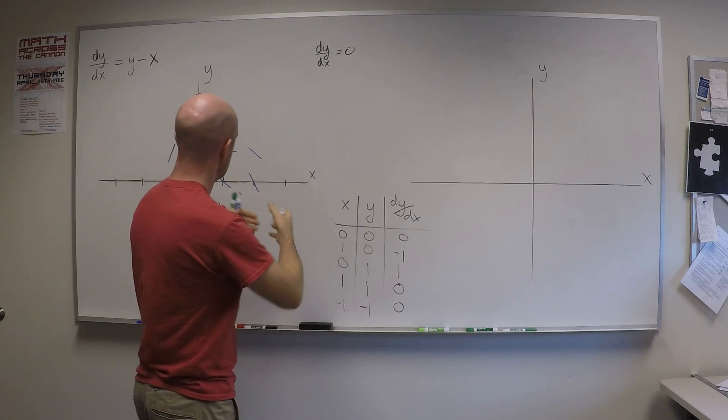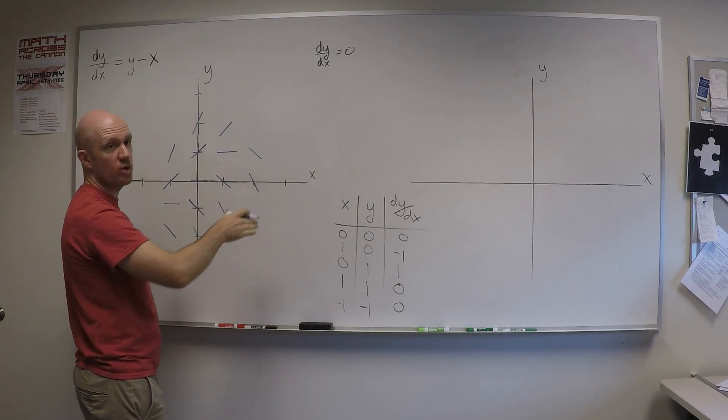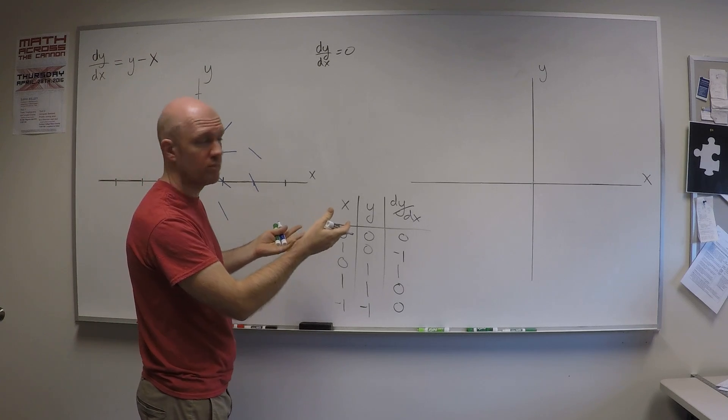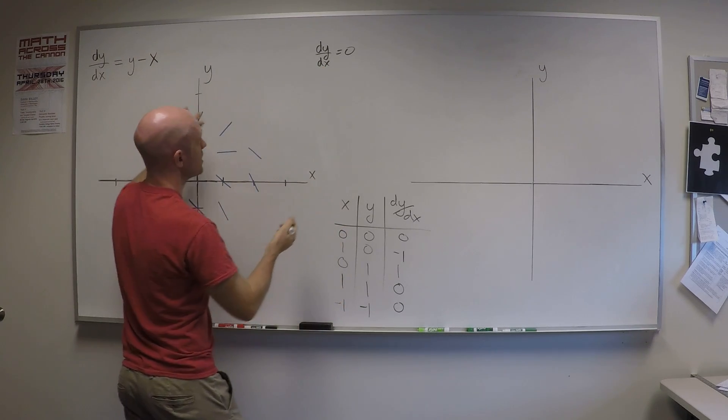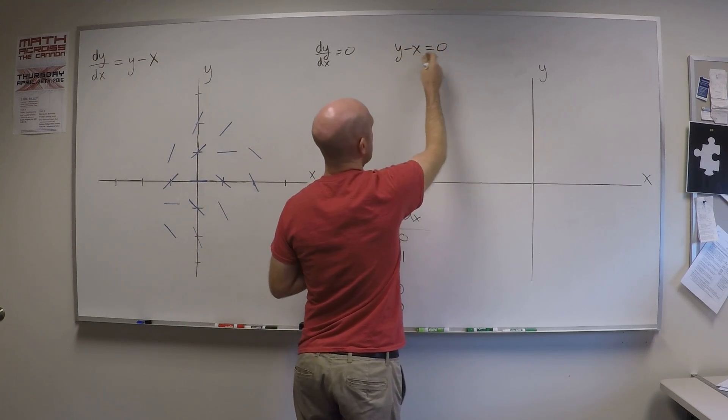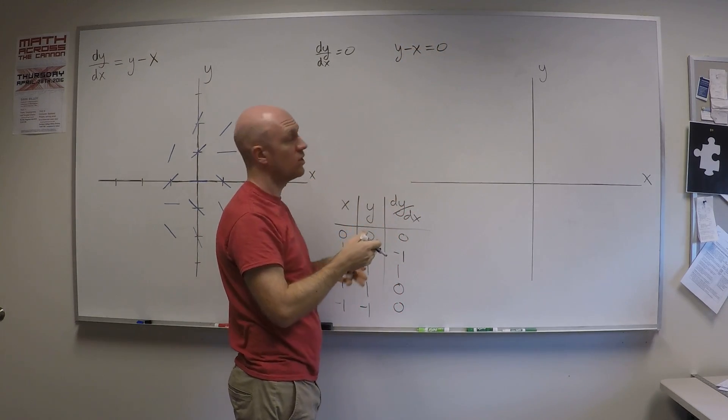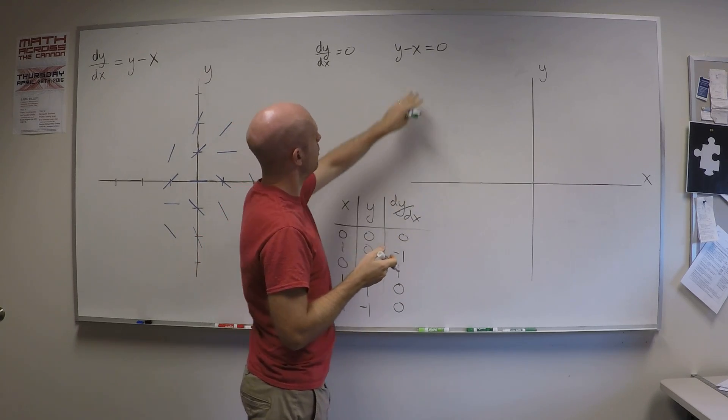How about dy/dx equals 0? Okay. So I'm asking for all the points in this xy plane in which a solution to this differential equation would have slope 0. Okay. Well, that's dy/dx equals 0. That's the same as y minus x equals 0. And so all the points y minus x where y minus x is 0, the solution passing through that point would have slope 0. But y minus x equals 0, we know what that is.